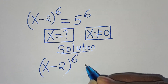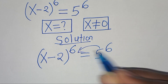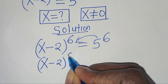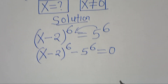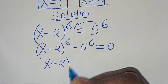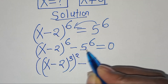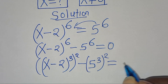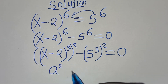The first step is to bring 5 to the power of 6 to the left-hand side, so we have (x minus 2)^6 minus 5^6 equals 0. We can express (x minus 2)^6 as [(x minus 2)^3]^2, and 5^6 as [5^3]^2, giving us a difference of squares form.